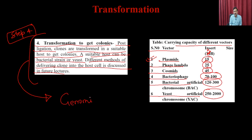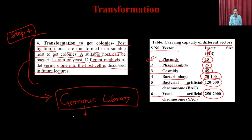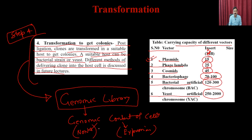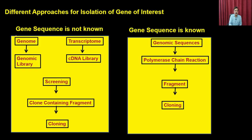Post-ligation, the clones are transformed into a suitable host — bacterial strain or yeast — to get colonies. The genomic library represents the genomic content of the cell for both non-expressing and expressing sequences — it represents introns as well as exons. The genomic library is useful when trying to fish out a particular gene fragment irrespective of its expression status.